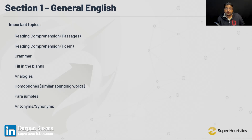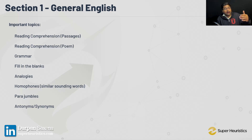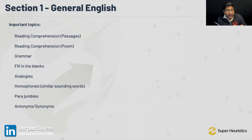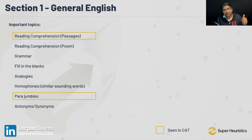In General English, the important question types include reading comprehensions, passages, and poems. Usually you don't encounter poems in CAT, but they are there in SNAP and they are not easy. You will also encounter grammar and fill-in-the-blanks questions — types you haven't encountered in CAT but are there in SNAP. Then you have analogies and homophones, which are similar-sounding words. Para jumbles you know from CAT. So apart from reading comprehension and para jumbles, everything else is something you haven't seen in CAT.